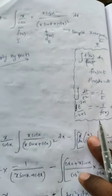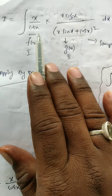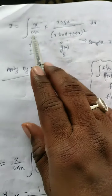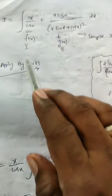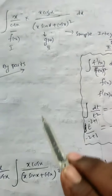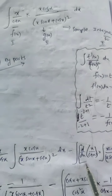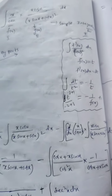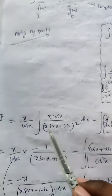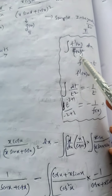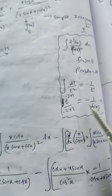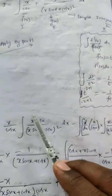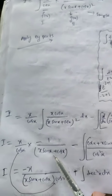Now I apply integration by parts. I take the first function as x/cos x and the second function as x cos x / (x sin x + cos x)². By parts: first function × ∫(second function dx) minus ∫[d/dx(first function) × ∫(second function dx)] dx. The integration of the second function using the f'/f² formula gives minus 1/(x sin x + cos x).